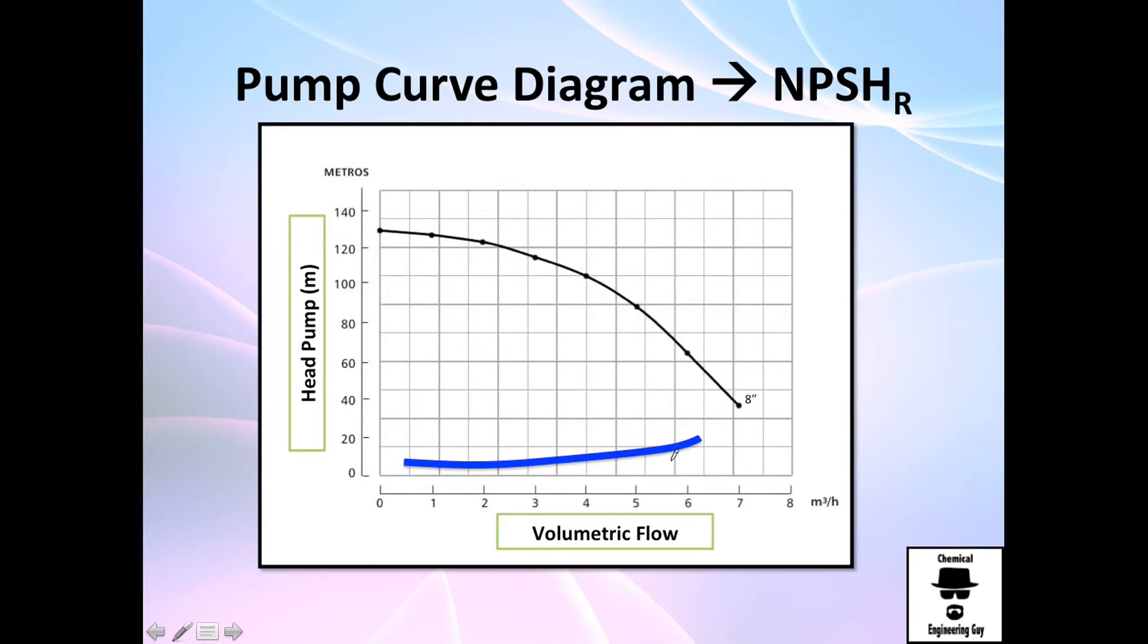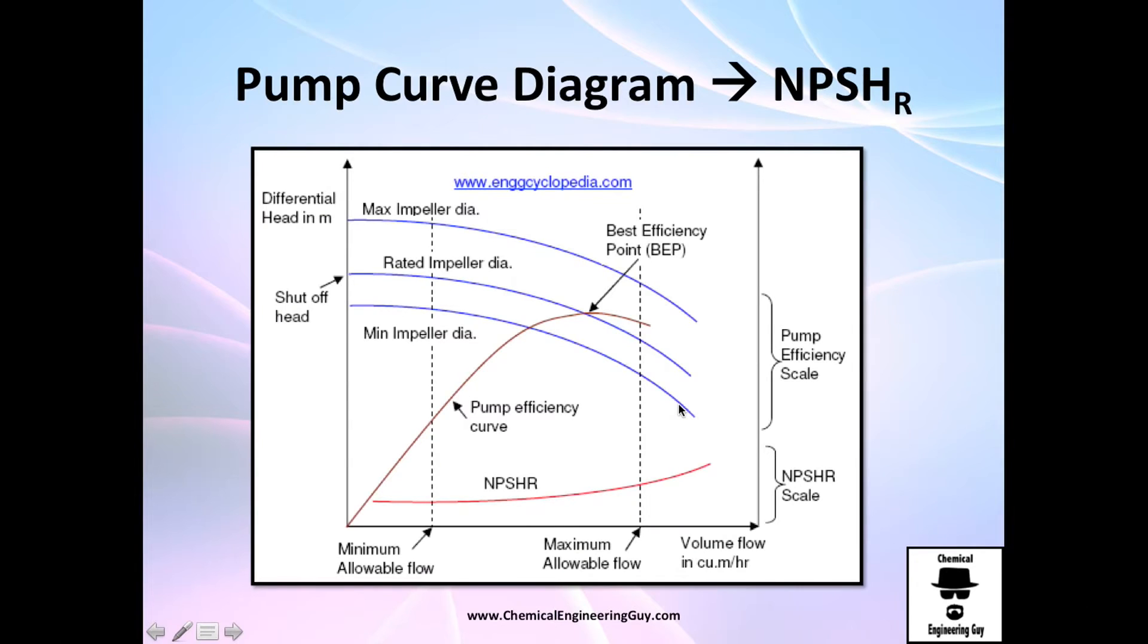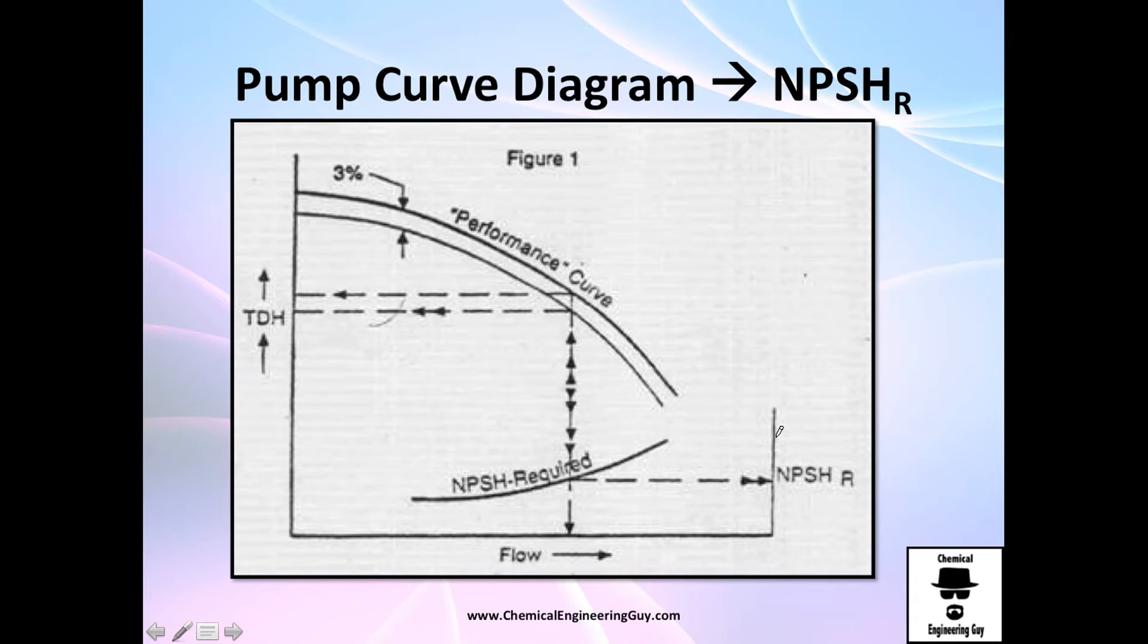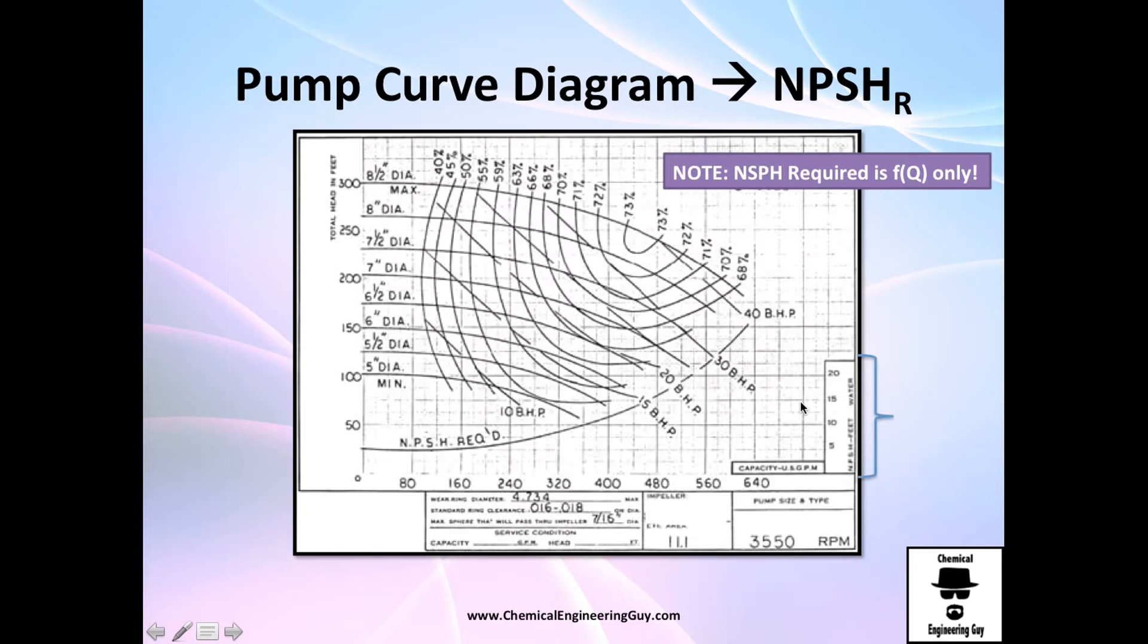That's the typical place we're going to find an NPSH R curve. For example, in this diagram you can see the NPSH line and the scale is right here. Don't use this to the left, use this to the right.